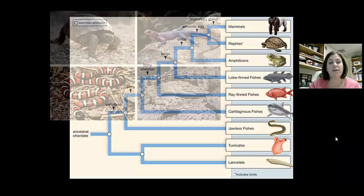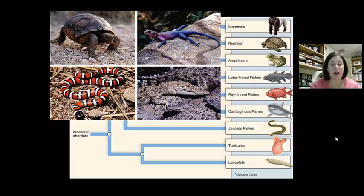Examples of reptiles include alligators, crocodiles, turtles, snakes, and lizards. Reptiles are covered in a hard, keratinized scale, which prevents the loss of water and offers protection from predators. Reptiles also have well-developed lungs. Most of them have a three-chambered heart, but some actually have advanced to a four-chambered heart. This is what we would see in crocodiles.